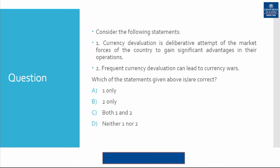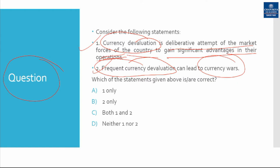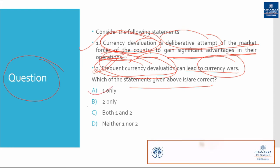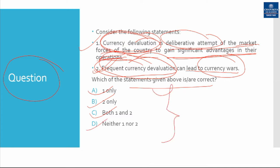Before going into the discussion, I want to share a question with you. Consider the following statements. First: currency devaluation is a deliberate attempt of the market forces of the country to gain significant advantages in their operations. Second: frequent currency devaluations can lead to currency wars. Which of the statements given above are correct? Option A: one only, Option B: two only, Option C: both one and two, Option D: neither one nor two. Lock your answers and watch the video to find out.